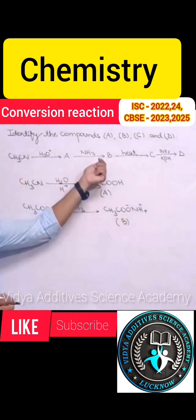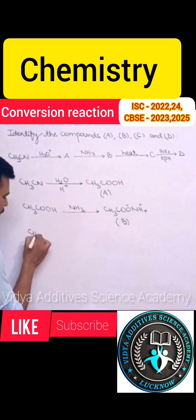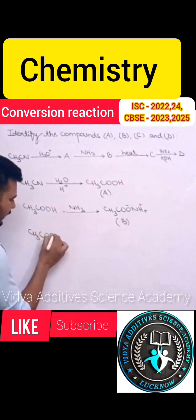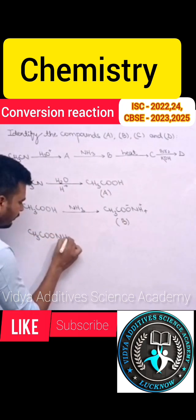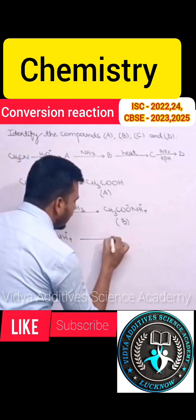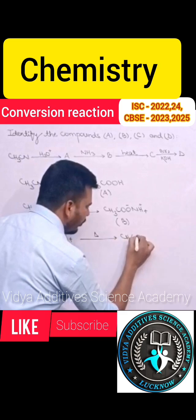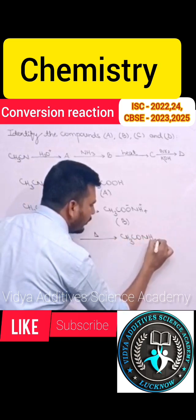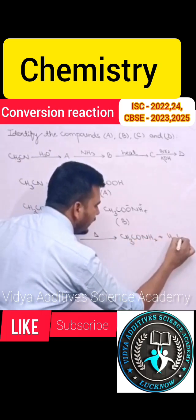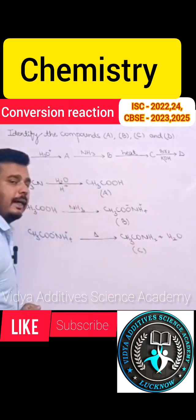Further compound B on heating gives compound C. So ammonium acetate on heating will produce acetamide and it will produce one molecule of water and convert into compound C. So compound C is acetamide.